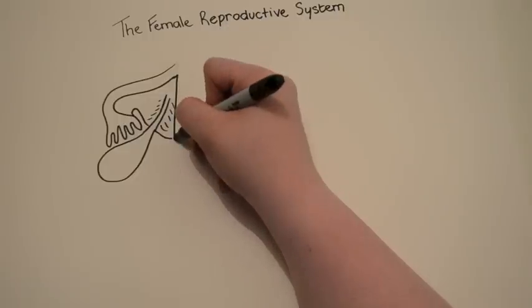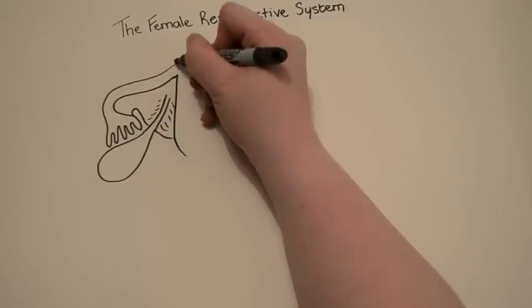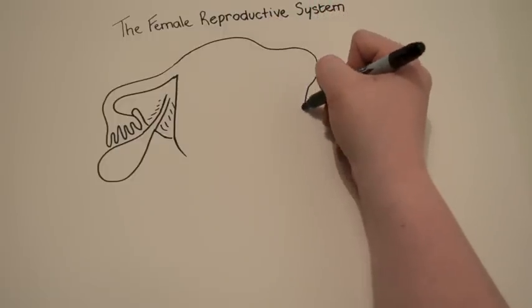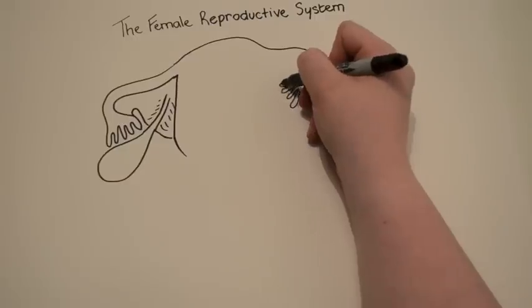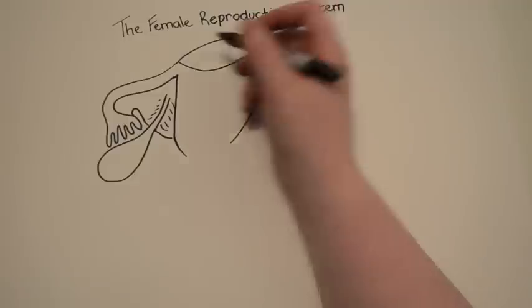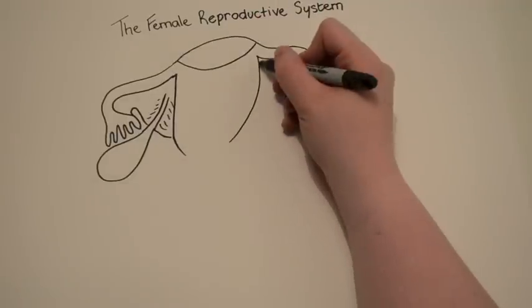The ovaries are located in the lateral wall of the pelvis, known as the ovarian fossa. The ovaries contain follicles, which under hormone regulation, develop the female gamete. This is a process known as folliculogenesis.